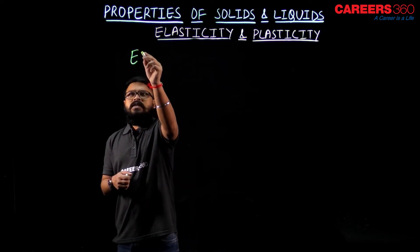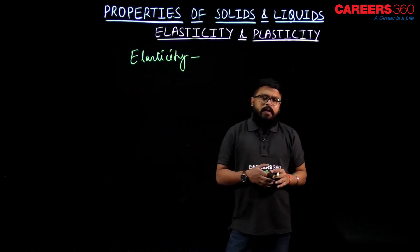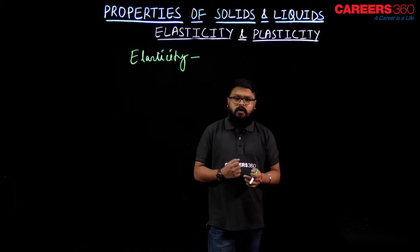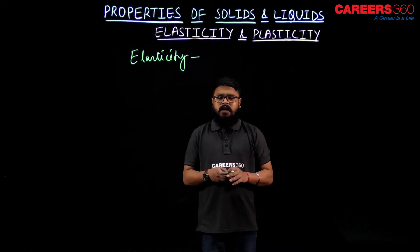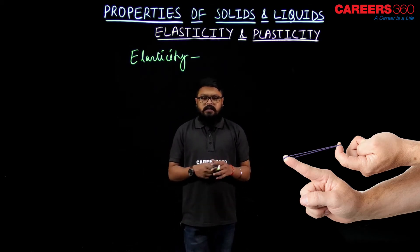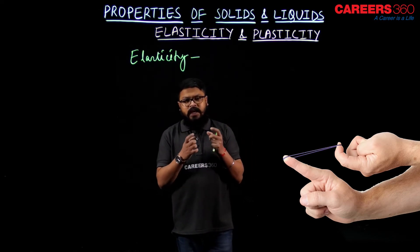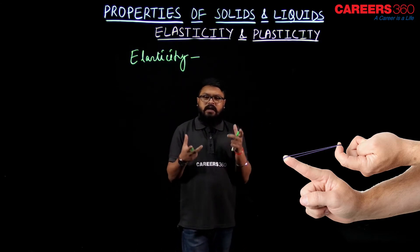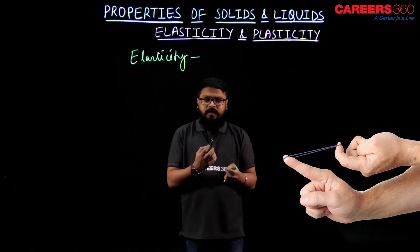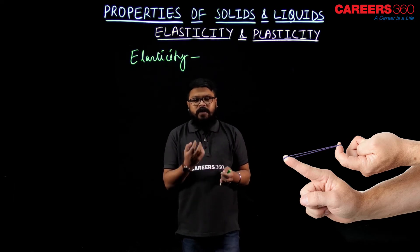First we will discuss elasticity. Elasticity is the property of a body by virtue of which, when we remove the external force applied on it, the body comes back to or regains its original shape and size. For example, take a rubber band — when I stretch it, its size changes or it gets elongated. When I release it, it comes back to its original shape and size. So the property by virtue of which the rubber band regained its original shape and size is known as elasticity.